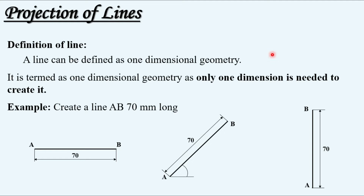It should be understood that the difference between these three solutions is regarding the position of the line — how it is being placed — and not about the dimension. As only one dimension is required to create the line, it is termed as one-dimensional geometry.